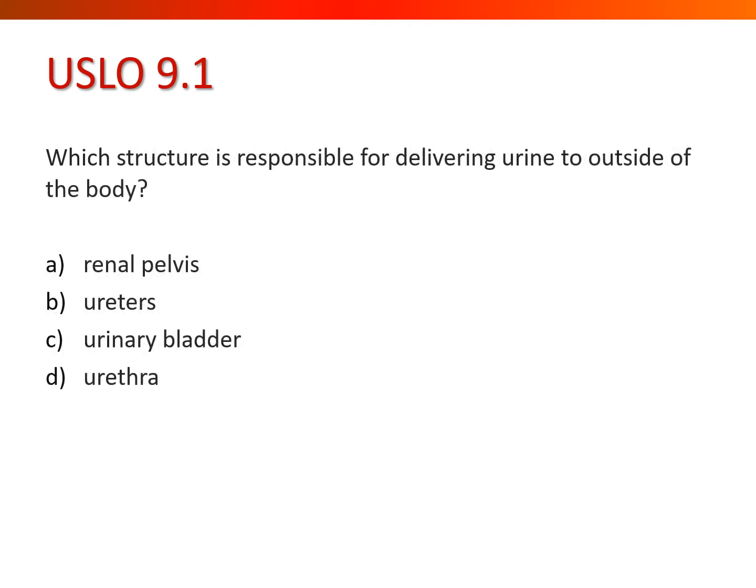Which structure is responsible for delivering urine to outside of the body? Hopefully you know the anatomy — it would be the urethra. There are four major structures associated with the gross anatomy of the urinary system: the kidney, the ureters, the bladder, and the urethra.